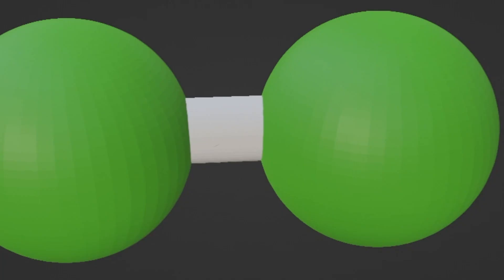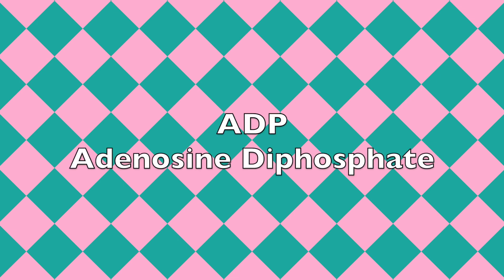Now remember that for ATP to release its energy, it has to let one phosphate group go. Well, after doing that, it is now ADP, or adenosine diphosphate.